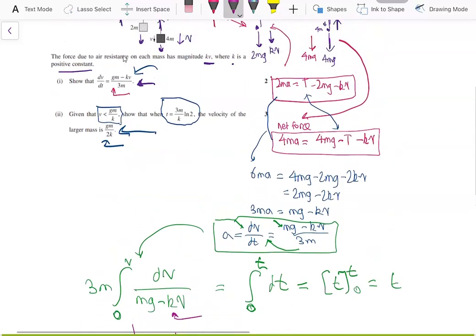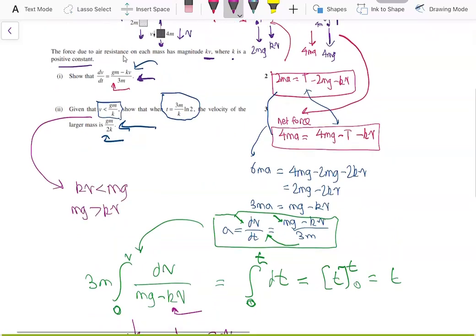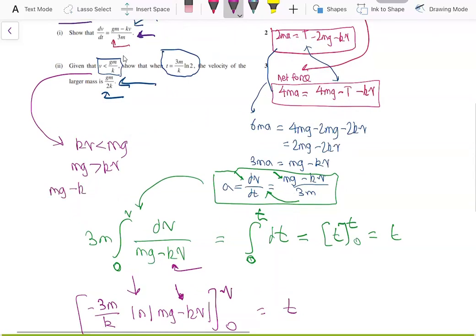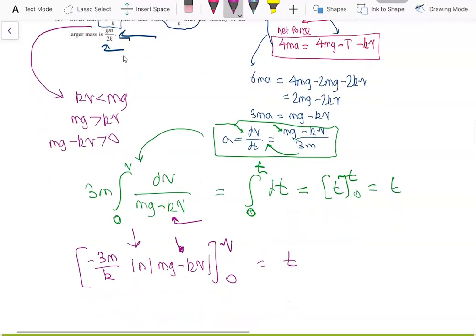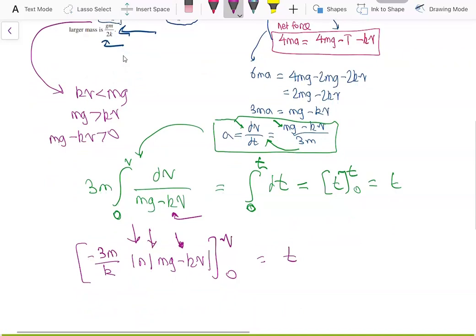Now, remember v was less than gm over k, so that means kv is less than gm, so mg is greater than kv. Or mg minus kv greater than 0. So since mg minus kv is greater than 0, you don't need the absolute value signs.